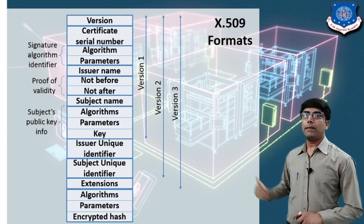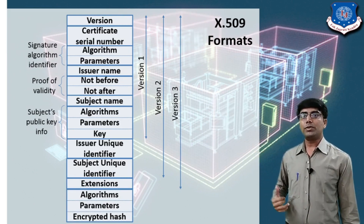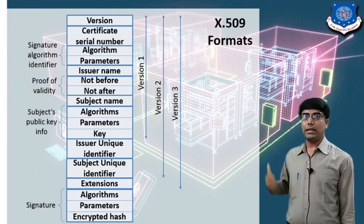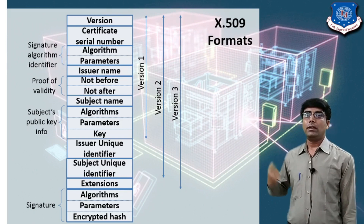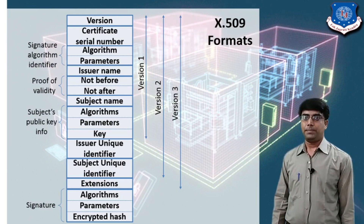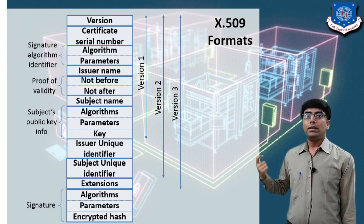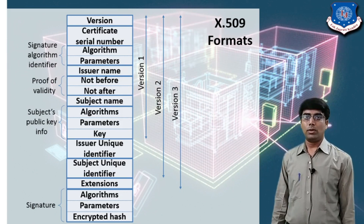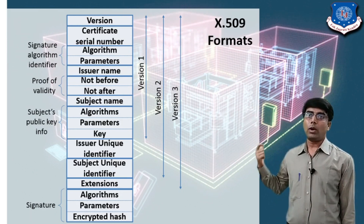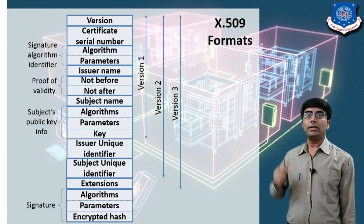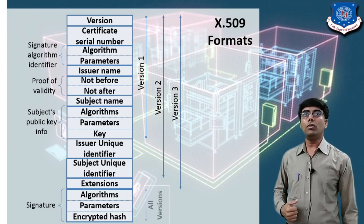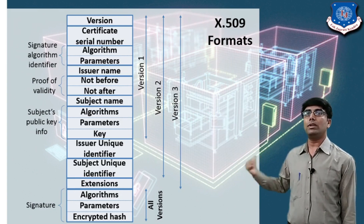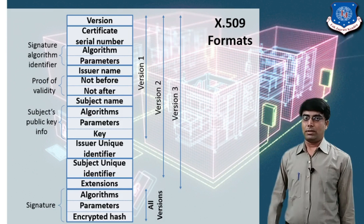The final field is the signature, which is generated using a hash algorithm. The signature is created and appended with the user's public key and identity. The signature is also encoded using a hash code. This completes the X.509 format — when the certificate authority generates a certificate, it includes all these fields, and the signature is used across all versions.